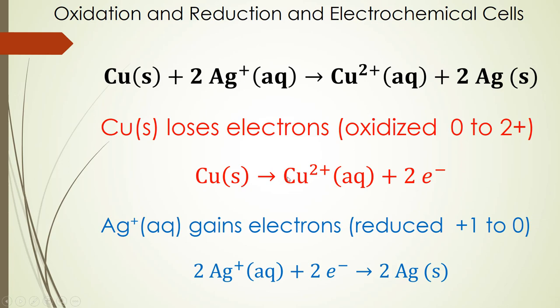Copper solid goes to copper ions plus two electrons and for silver in the reduction reaction we start off with ions already oxidized in solution. We add two electrons, that's our reduction, and we're going to end up with silver metal.